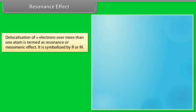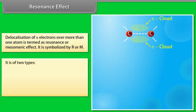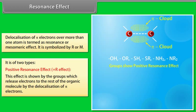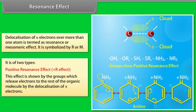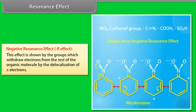Resonance effect: delocalization of pi electrons over more than one atom is termed as the resonance or mesomeric effect, symbolized by R or M. It is of two types. Positive R effect: shown by groups which release electrons to the rest of the organic molecule by delocalization of pi electrons, for example aniline. Negative R effect: shown by groups which withdraw electrons from the rest of the organic molecule by delocalization of pi electrons, for example nitrobenzene.